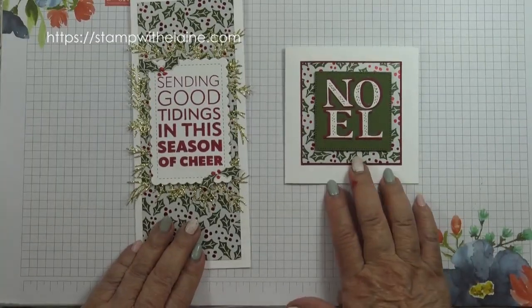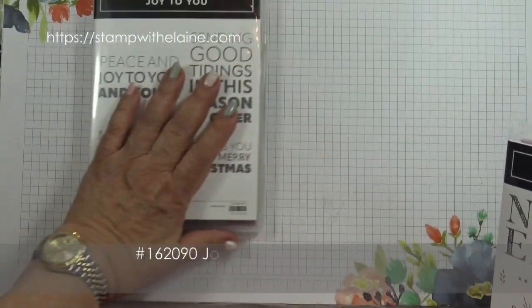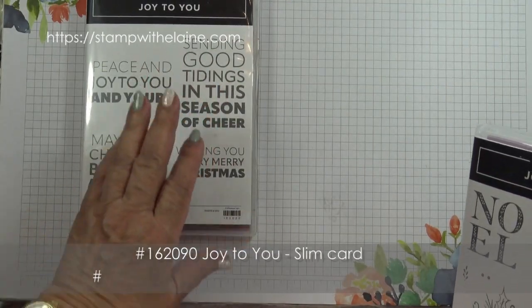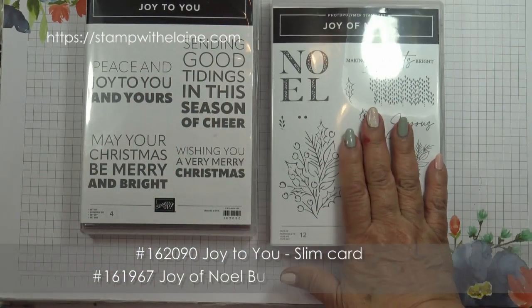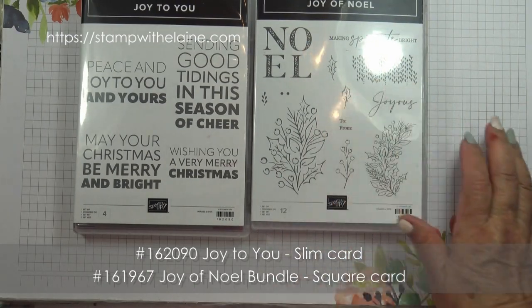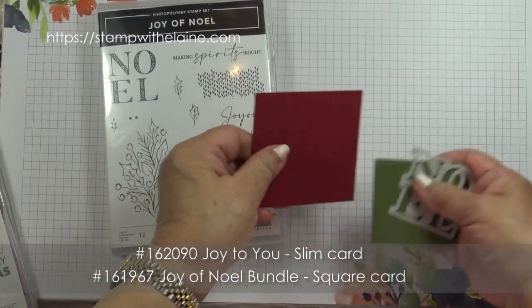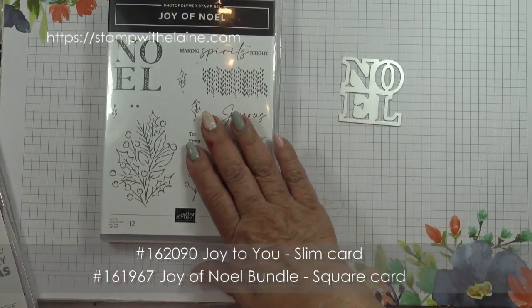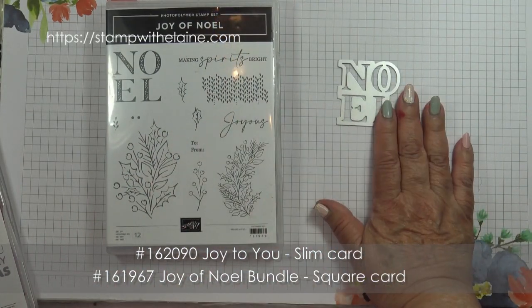So these are the two cards we're making. We're using the Joy to You stamp set for the long year card. In fact, we're also going to be using the dies from the Joy of Noel dies. So I'm using this one.